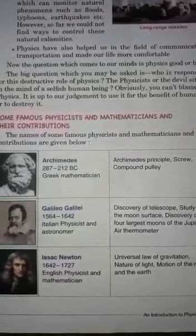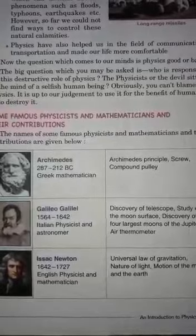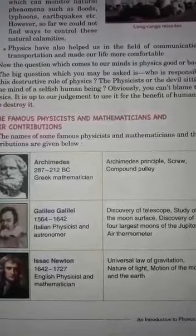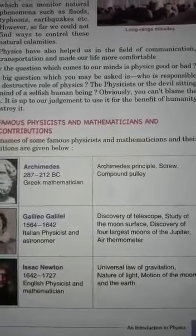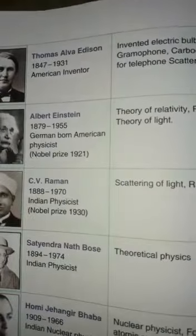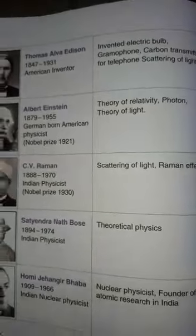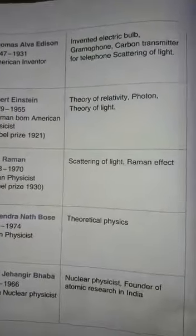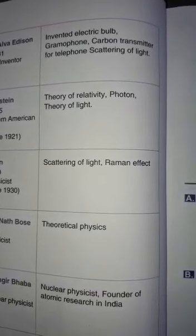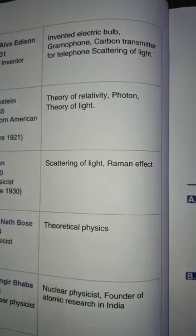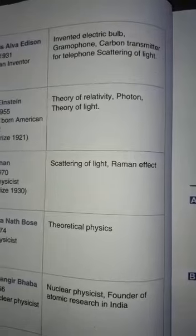Isaac Newton discovered the universal law of gravitation, the nature of light, and the motion of the moon and the earth. Next is Thomas Alva Edison. He was an American inventor and he discovered the electric bulb, gramophone, and carbon transmitter for the telephone.